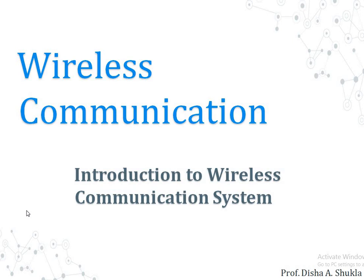If there is no physical medium, then how does wireless communication transmit the signal? Even though there are no cables used in wireless communication, the transmission and reception of the signal is accomplished with antennas. Antennas are electrical devices that transform the electrical signal to the radio signal in the form of electromagnetic waves and vice versa. These electromagnetic waves propagate through space. Hence, both the transmitter and the receiver consist of an antenna.